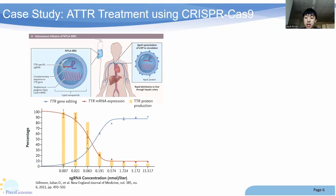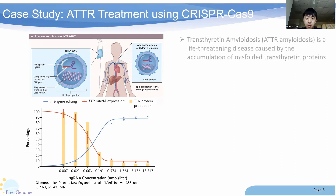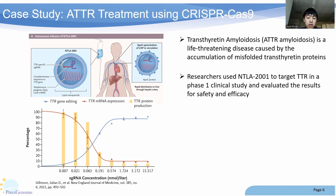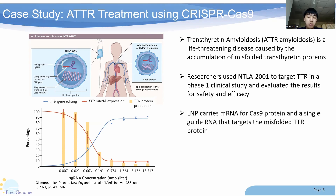Now moving on to the case study. This is a case study using CRISPR-Cas9 for ATTR treatment. Transthyretin amyloidosis is a life-threatening disease caused by the accumulation of misfolded transthyretin proteins. In this clinical trial, researchers used a lipid nanoparticle, NTLA, to target the TTR gene in a phase one clinical study and evaluate the results for safety and efficacy. In the top left diagram, you can see the schematic for the NTLA LNP. This LNP carries an mRNA for the Cas9 protein and a single-guide RNA that targets the misfolded TTR protein.